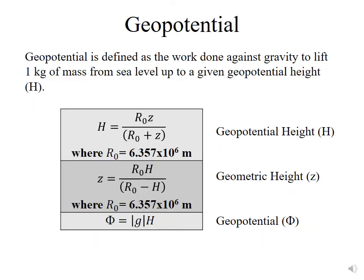And then we have the term geopotential, which is defined as the work done against gravity to lift one kilogram of mass from sea level up to a given geopotential height. Geopotential height is defined as h equals the radius of the Earth, r-naught, times the geometric height z, divided by r-naught plus z. That's our geopotential height. Our geometric height can be rearranged to get your geometric height if you happen to know the geopotential height. And then we have that geopotential term, which is the energy term. The geopotential is equal to gravity times the geopotential height. We'll become a lot more familiar with these equations as we start to use them along the way.